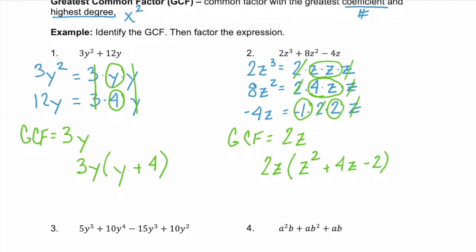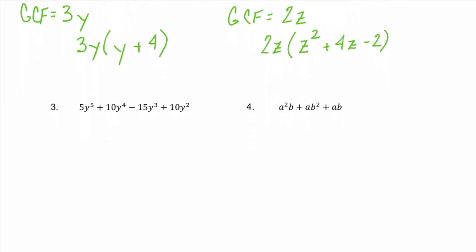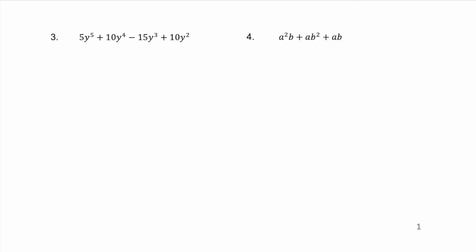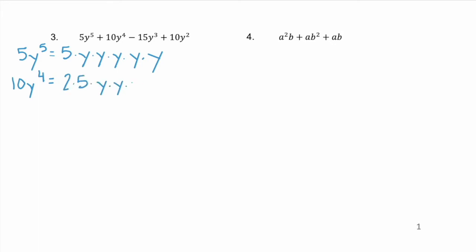How about a couple more examples? Remember, we're going to identify the GCF and then factor the expression. In example 3, we have four terms. The first, 5y to the fifth, is 5 times five y's. The second term is 10y to the fourth — 10 is 2 times 5 and y to the fourth is four y's. The third term, minus 15y cubed, has a negative sign, and 15 is 3 times 5, with y cubed being three y's.